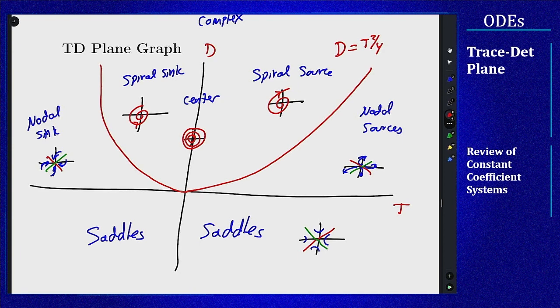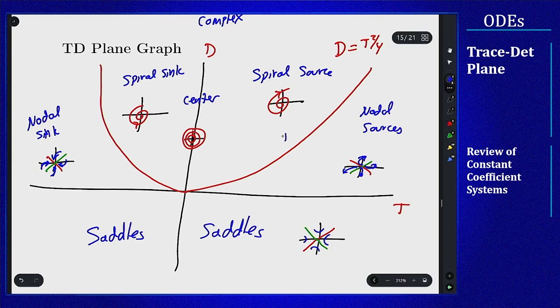So if t is positive, we're going to get a repeated with a positive eigenvalue or an improper nodal source, and if it's negative we get improper nodal sink. So on the positive side, this is our improper nodal source, and over here we get the same but a sink. And again I'll picture to illustrate that.